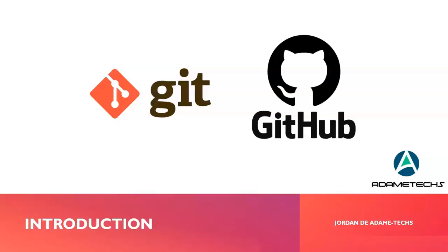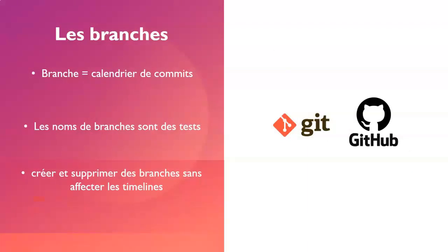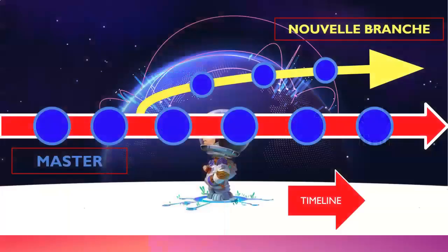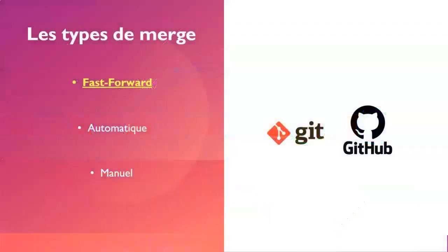Branching and merge are important concepts in git. Git facilitates the creation of branches and merges more than previous tools, and therefore many workflows depend on it. As we have discussed before, a branch is just a commit timeline. More precisely, branches are names or labels we give to a timeline in git. We can create and delete branches without affecting timelines — all we do is create or delete labels in the git commit. Until now, we have worked by default on the master branch. Now we can create a new branch to do some work and then join the master branch by merging all the changes that have occurred on the new branch.